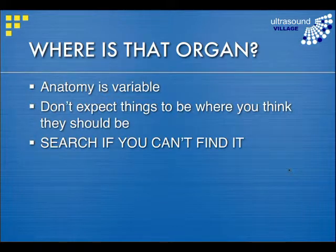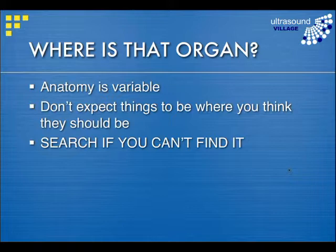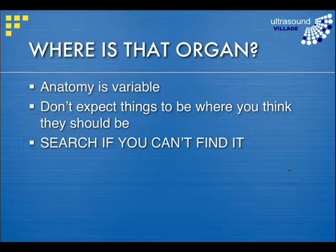Don't forget that anatomy can be variable — things aren't always exactly where you think they'll be. If you're looking for something and can't find it, you have to search around. Sometimes kidneys are found in the pelvis. Some people's spleen sits right up under the ribs, others quite low down. The liver is very variable in its shape and position. Some people have a Riedel's lobe — a long, thin liver on the right side. Other people's liver comes all the way around and can abut the spleen. People are different, so keep searching until you're following what you're looking for.